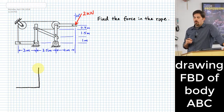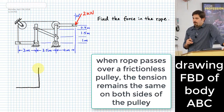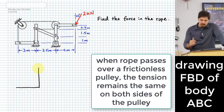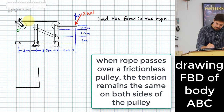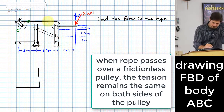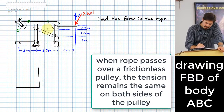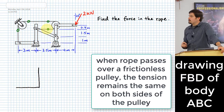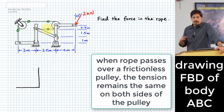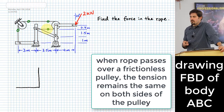Here's the thing about a rope: whenever you have a rope that passes around frictionless pulleys, the tension in the rope remains the same on both sides of where it encounters the pulley. If I look to this side of the pulley and to that side, the rope has the same tension in those two locations. Everywhere you look in this rope, it just passes over a couple of pulleys and changes direction — it has the same tension throughout.